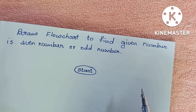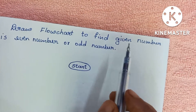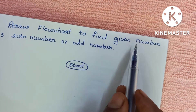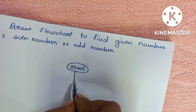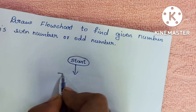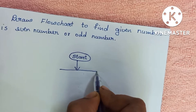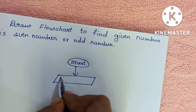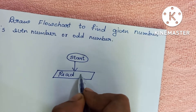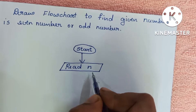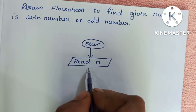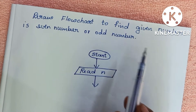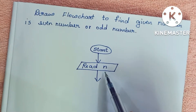Next we have to read the input variables. Here we need to find whether the given number is even or odd, so we read a number N. Input and output statements are written within a parallelogram shape — write 'Read N' inside the parallelogram.